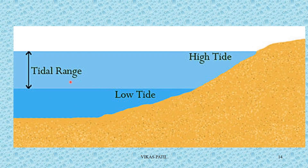The tidal range is basically the difference between the high tide and the low tide of a particular place. If you sit on a beach for 24 hours, you will find the water level will rise twice and then go down twice. The difference between those levels is the tidal range.